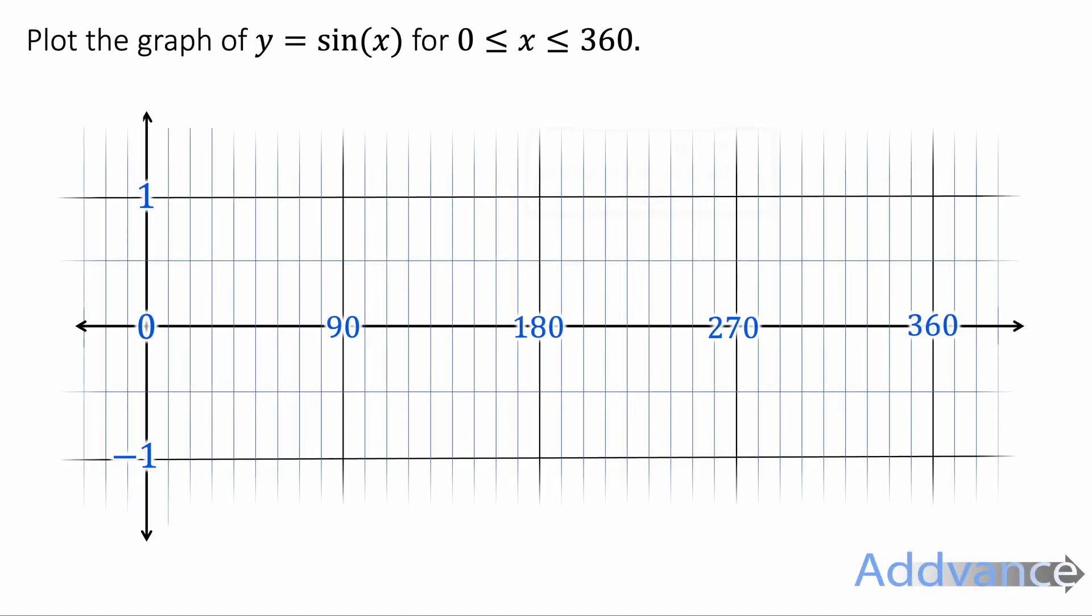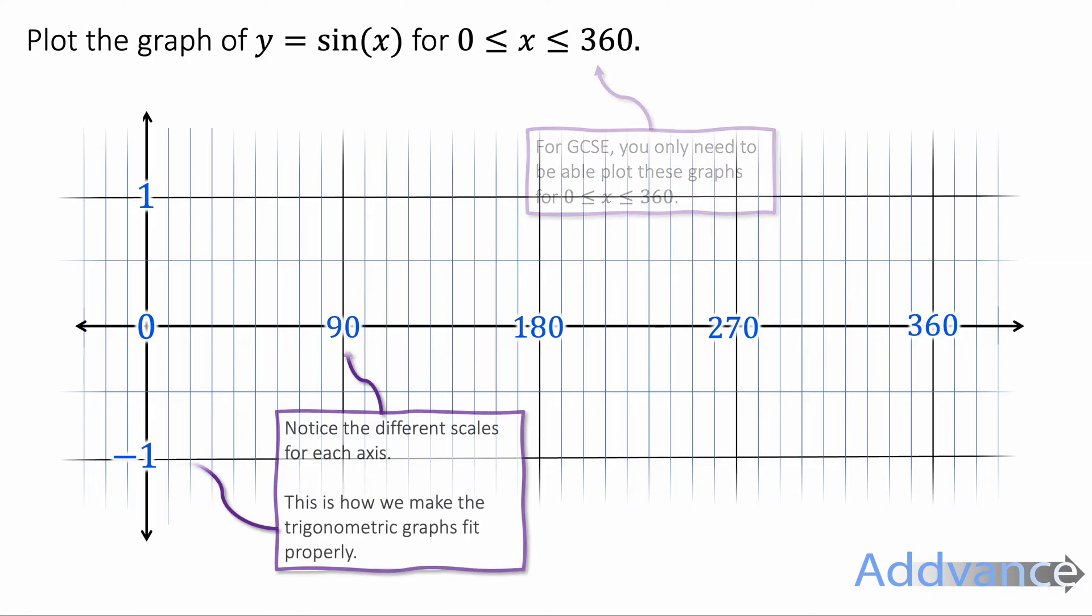We're going to start by plotting the graph y equals sin x between 0 and 360. For GCSE maths you only need to know this graph between 0 and 360. Notice the scales I'm using: I'm going from minus 1 to 1 on the y axis and on the x axis I'm going up in 90s: 90, 180, 270 and 360.